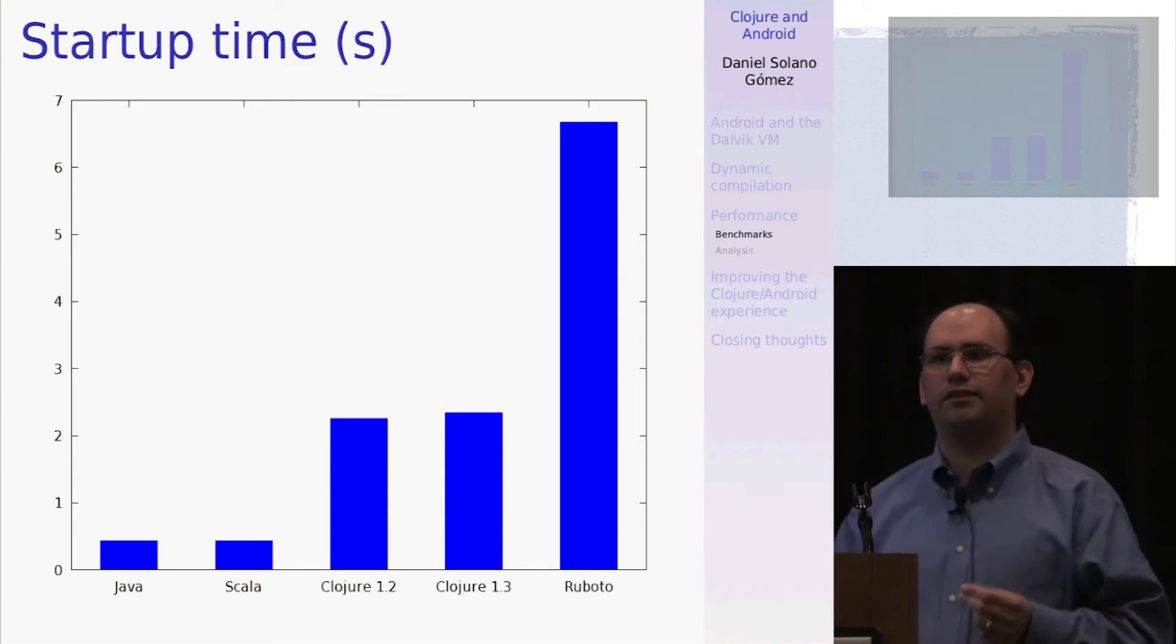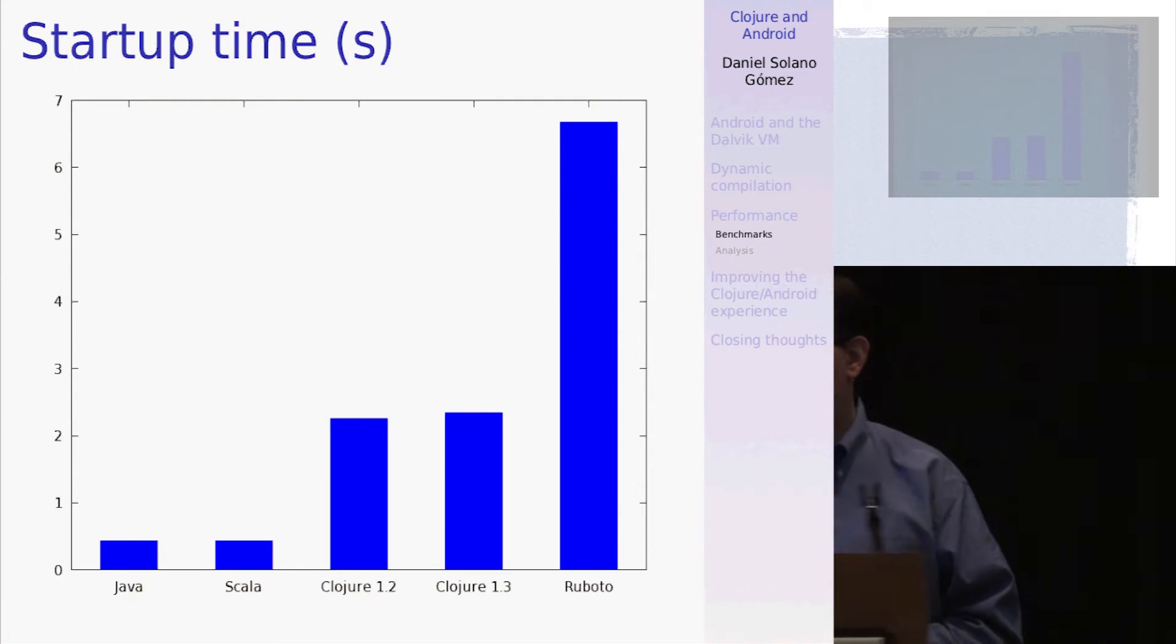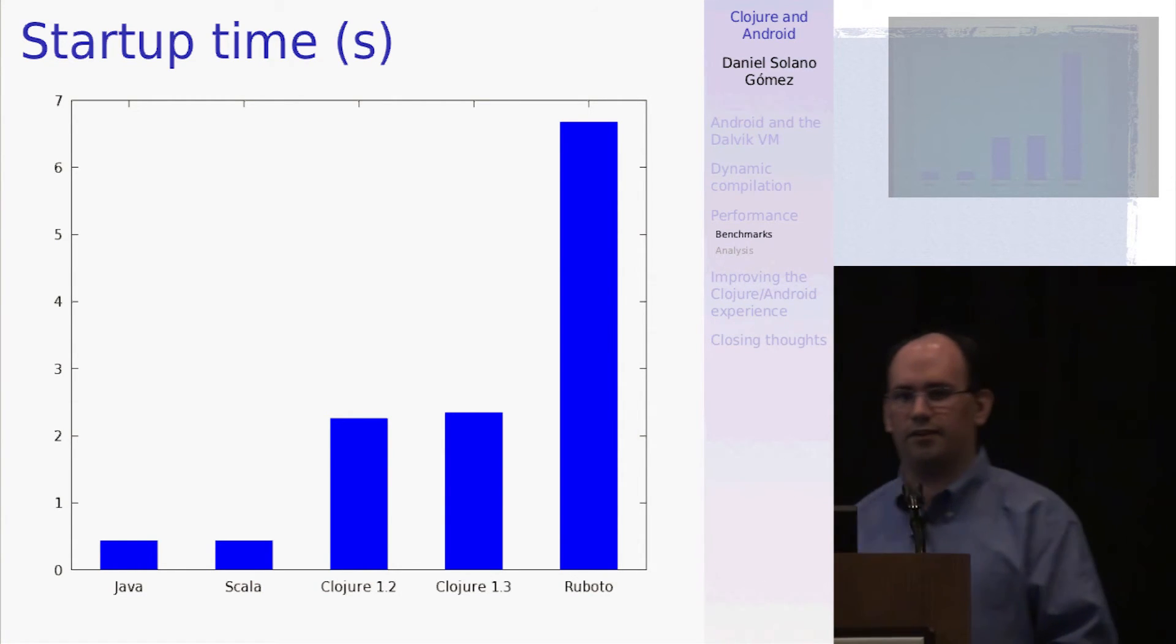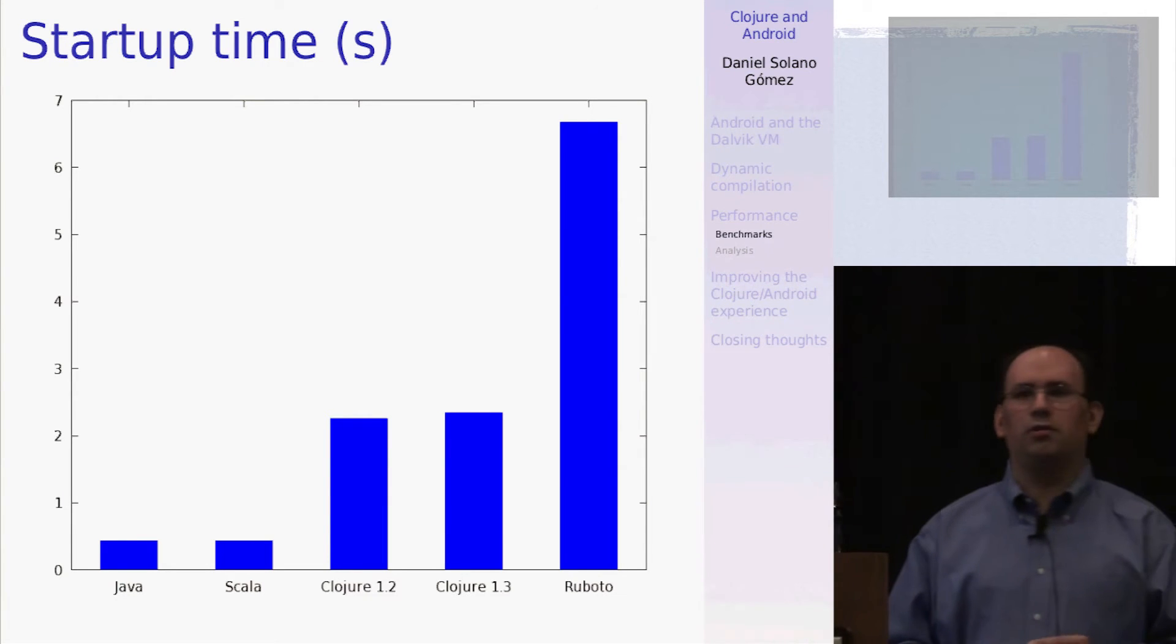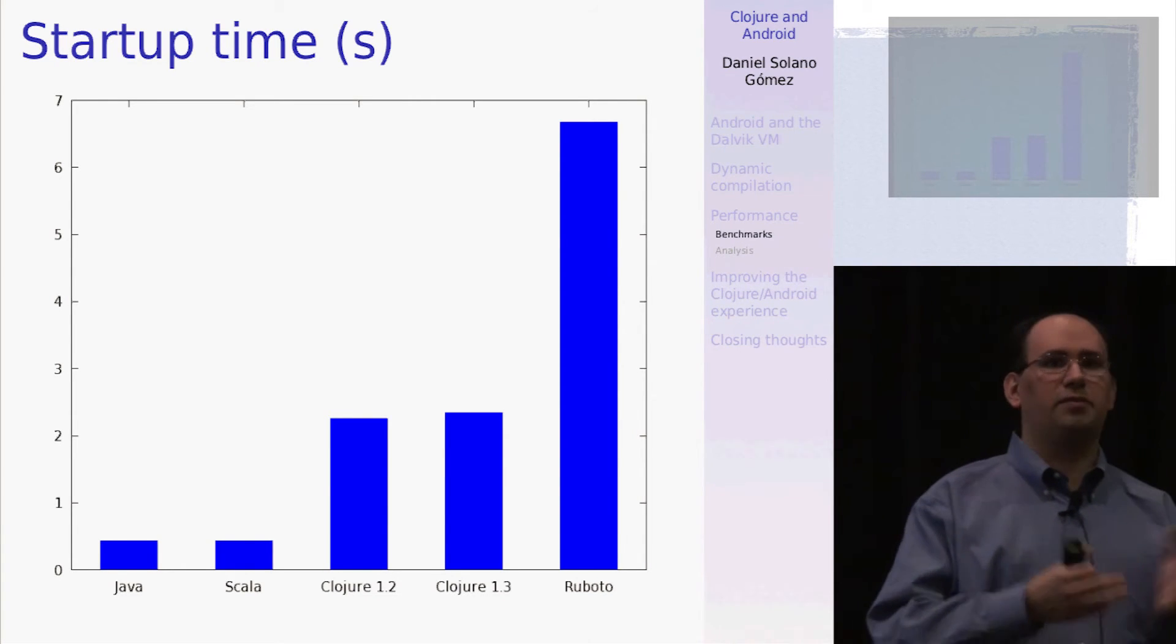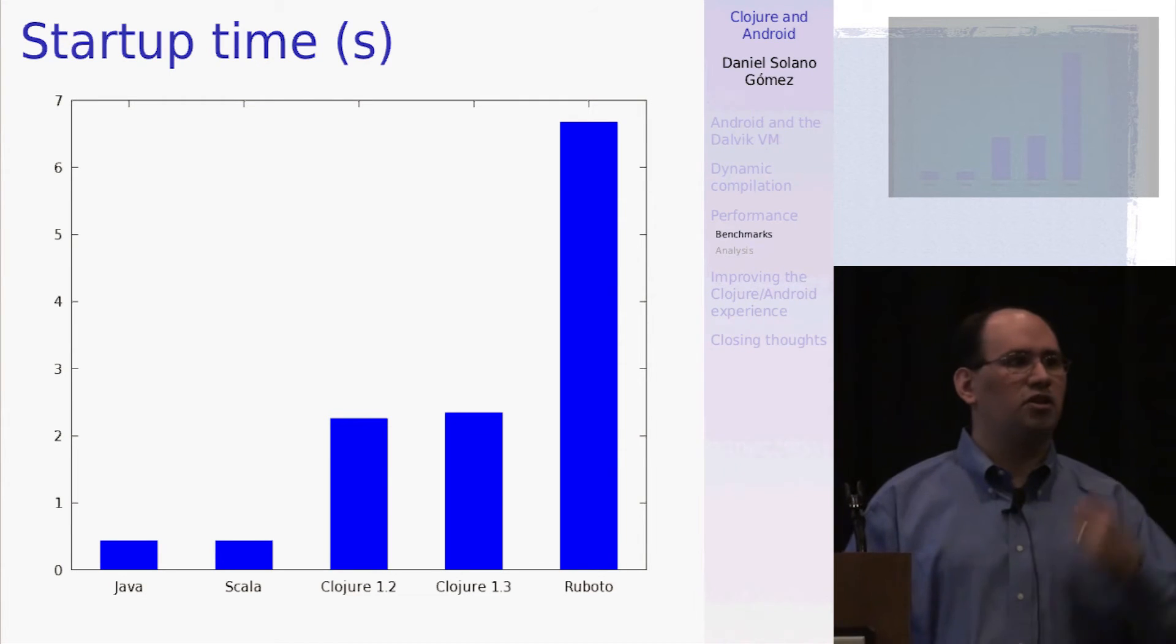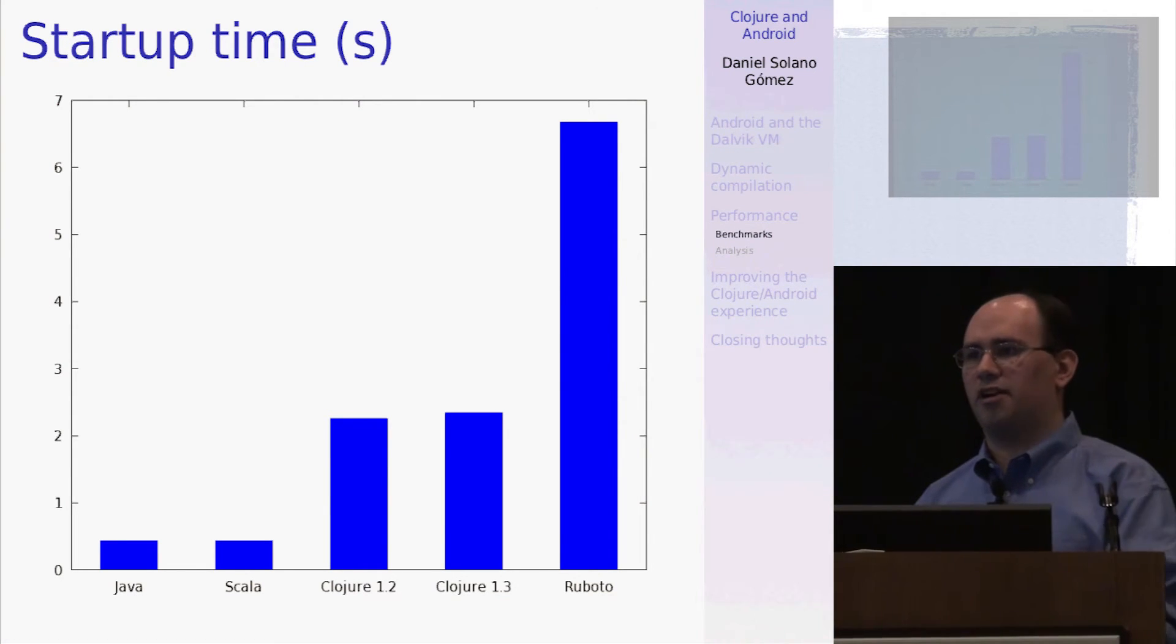The big thing that your users are going to realize is that when you want to start your application, how long does it take from the point where they tap on the application icon and they see something on the screen? And at least on my Nexus S phone, the minimum, which comes from Java and Scott, is about 400 milliseconds. I found that Clojure takes about 2.3 seconds thereabouts. So whether or not this is acceptable really depends on the type of application that you're running. Some applications are going to be taking a long time to load anyway, because they're either pulling something off the network or pulling something off disk. And so an extra 2.4 seconds might not make that much of a difference. But other applications, you really want to pop up as soon as a user clicks on something. And so this is one of the, I think, probably the biggest drawback right now to Clojure on Android.